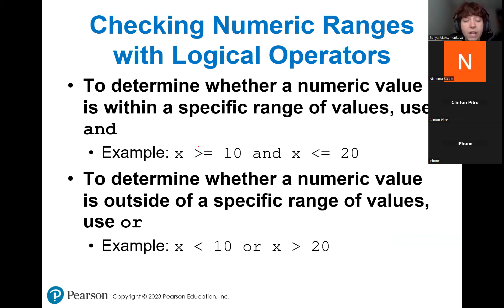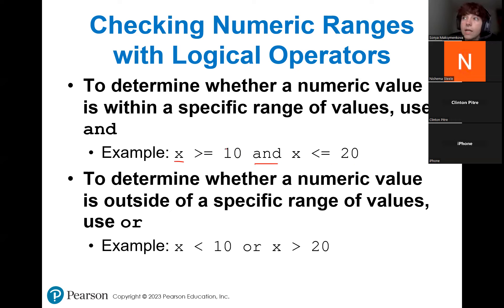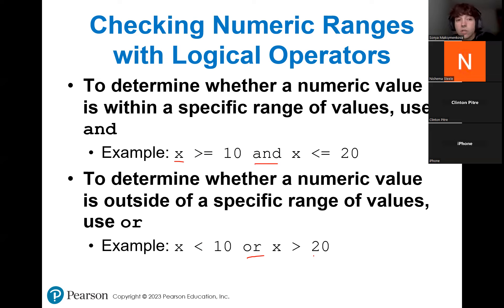This is how you check ranges of numbers using logical operators. If you want to check if a number is within a certain range, use AND. For example: if X is greater than 10 AND X is less than or equal to 20, the number is within that range. If you want to determine if a value is outside the range, use OR: if X is less than 10 OR X is greater than 20. So — AND for within range, OR for outside range.